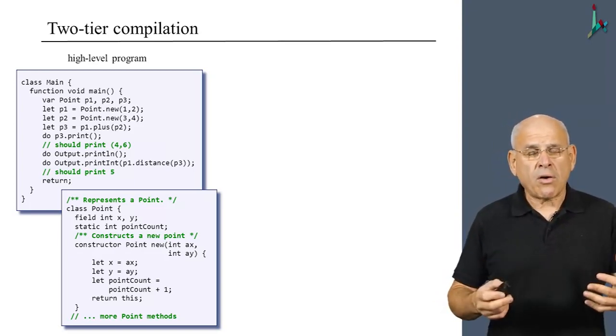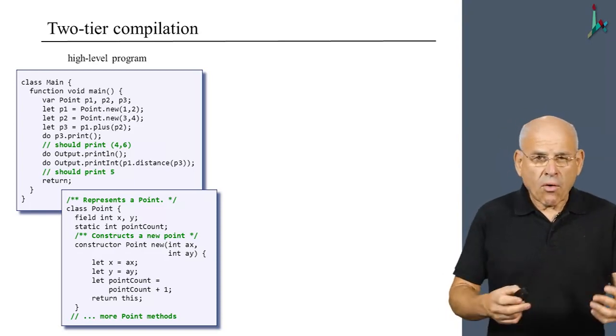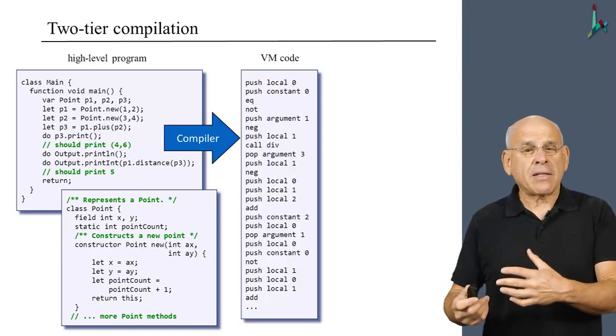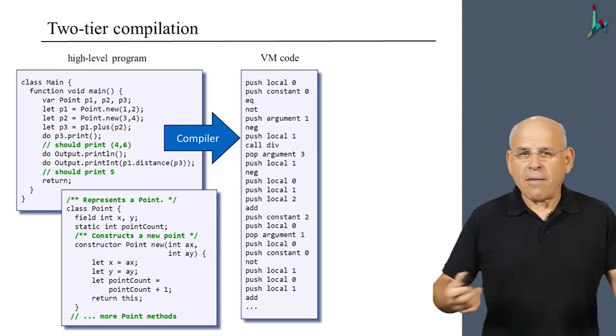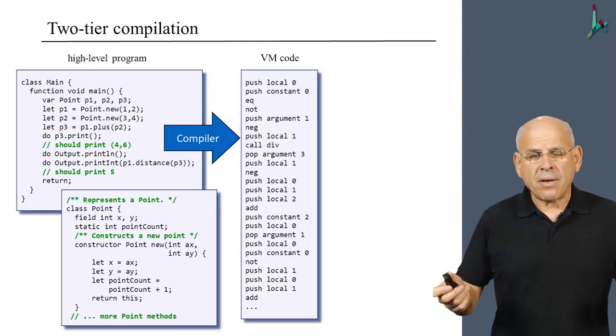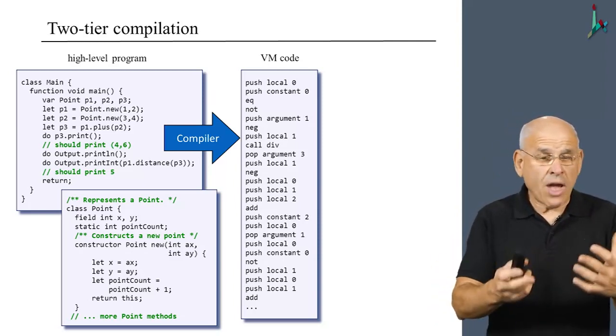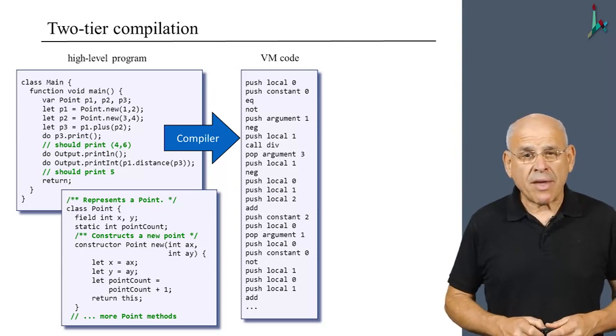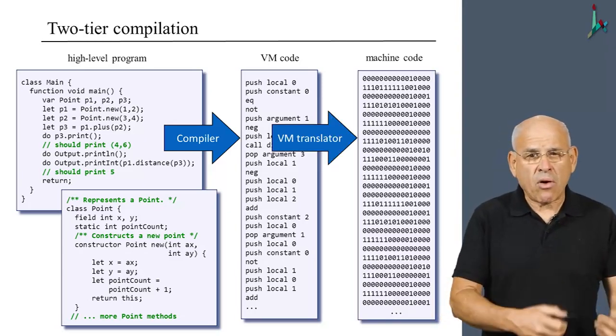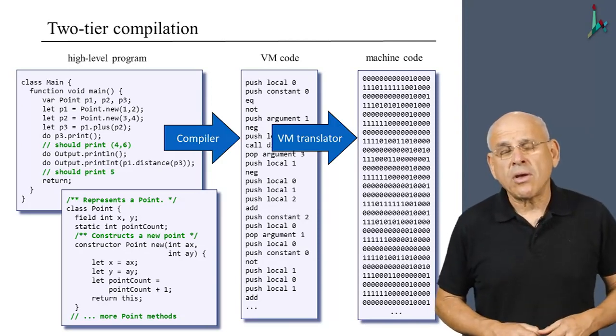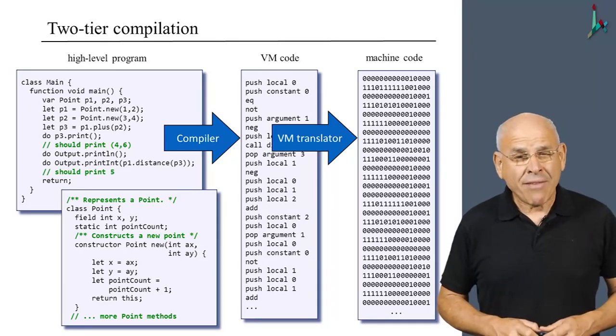So the program is first compiled into some intermediate code, which in Java is called bytecode. In C Sharp, I believe it's called IL, intermediate language. And in Jack, we simply call it VM code. And then there's another process that takes the VM code and translates it into the ultimate target object machine language.